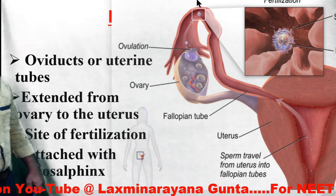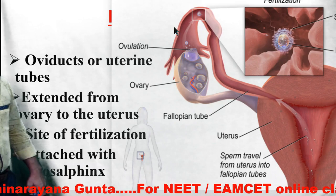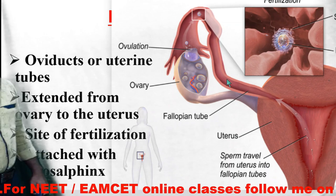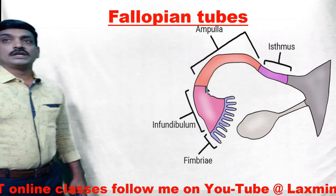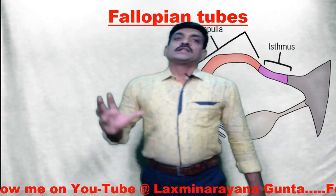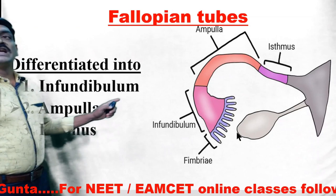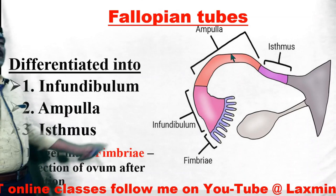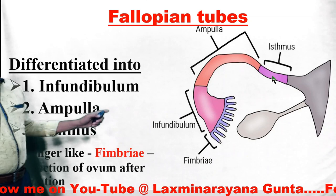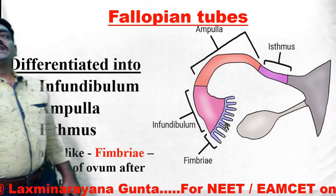The fallopian tube connects the ovary with the uterus. This fallopian tube is divided into three regions: the infundibulum, the ampulla, and the isthmus. The funnel-shaped structure is called the infundibulum, the middle wider part is called the ampulla, and the narrower part is called the isthmus. The finger-like projections are called fimbriae.